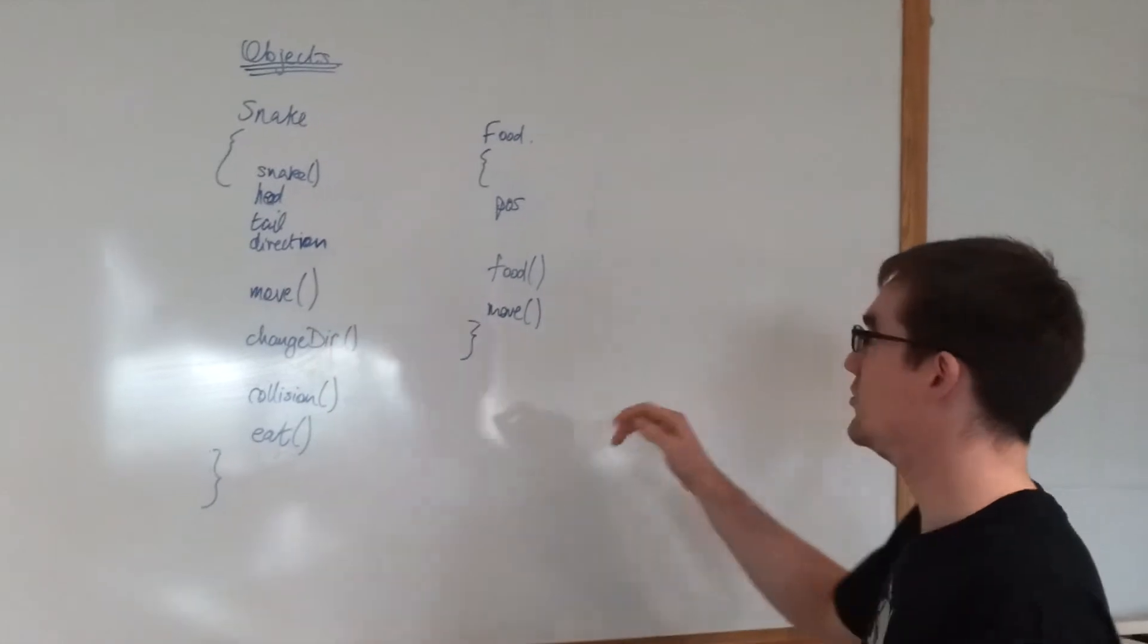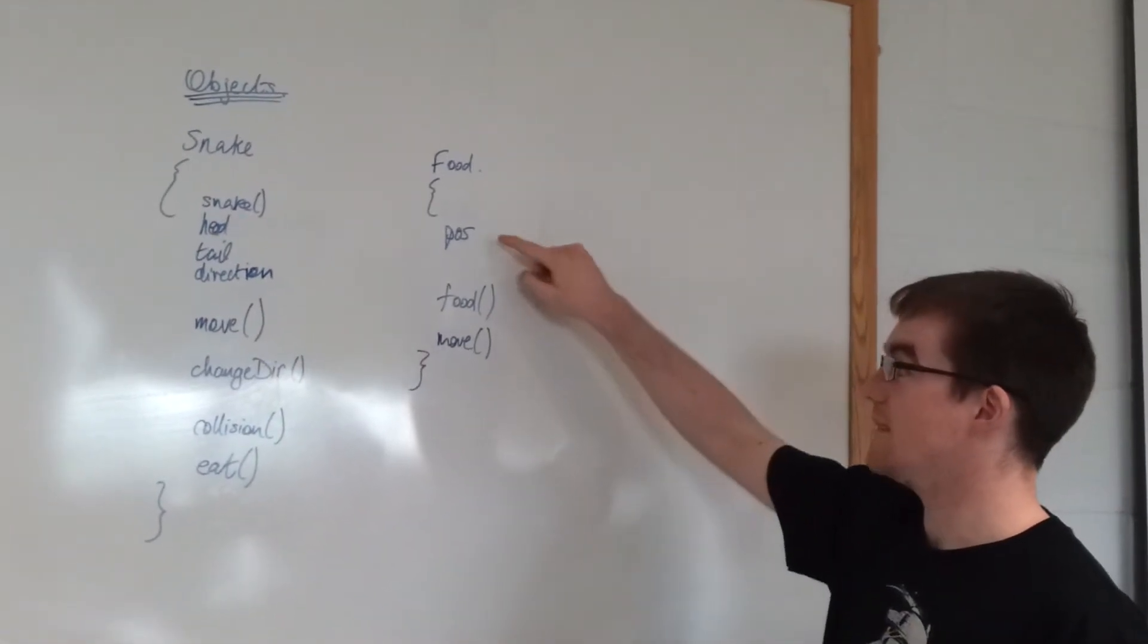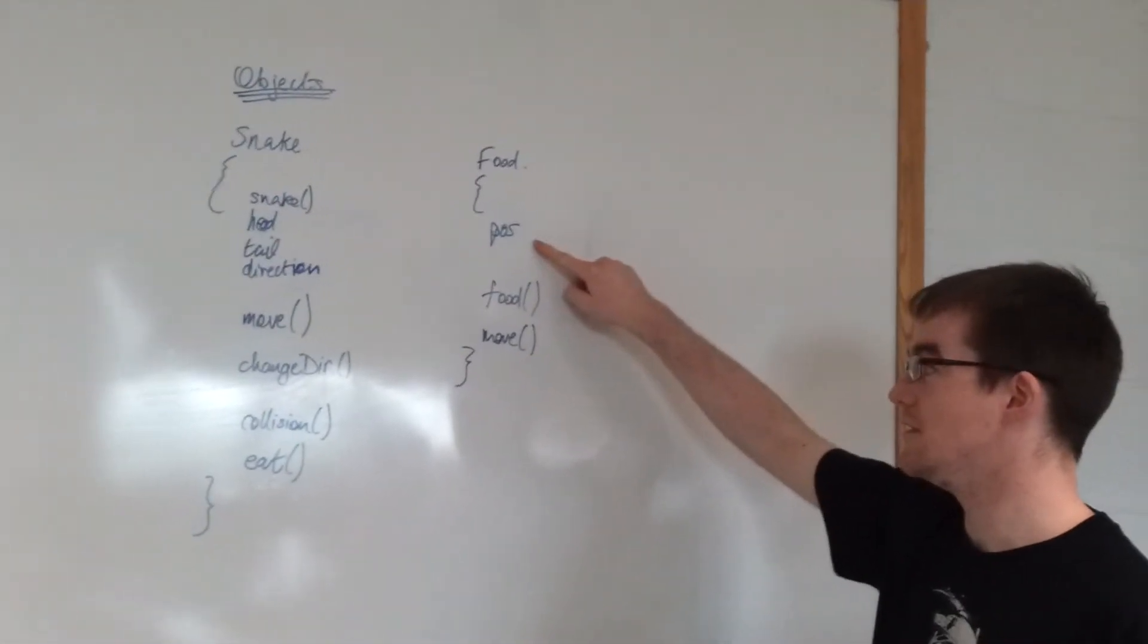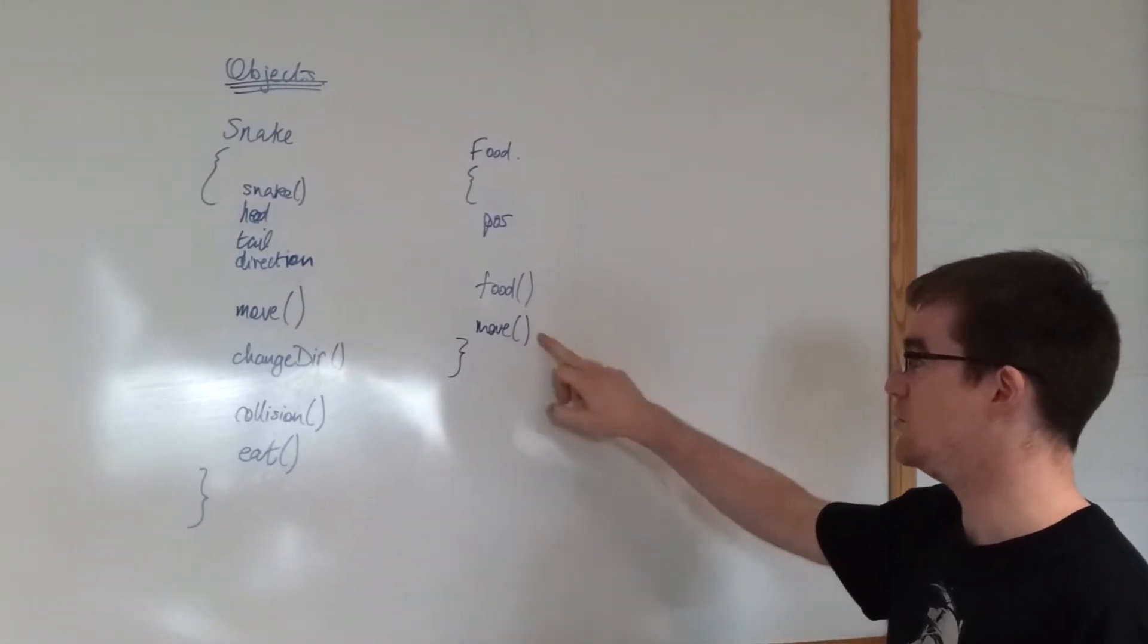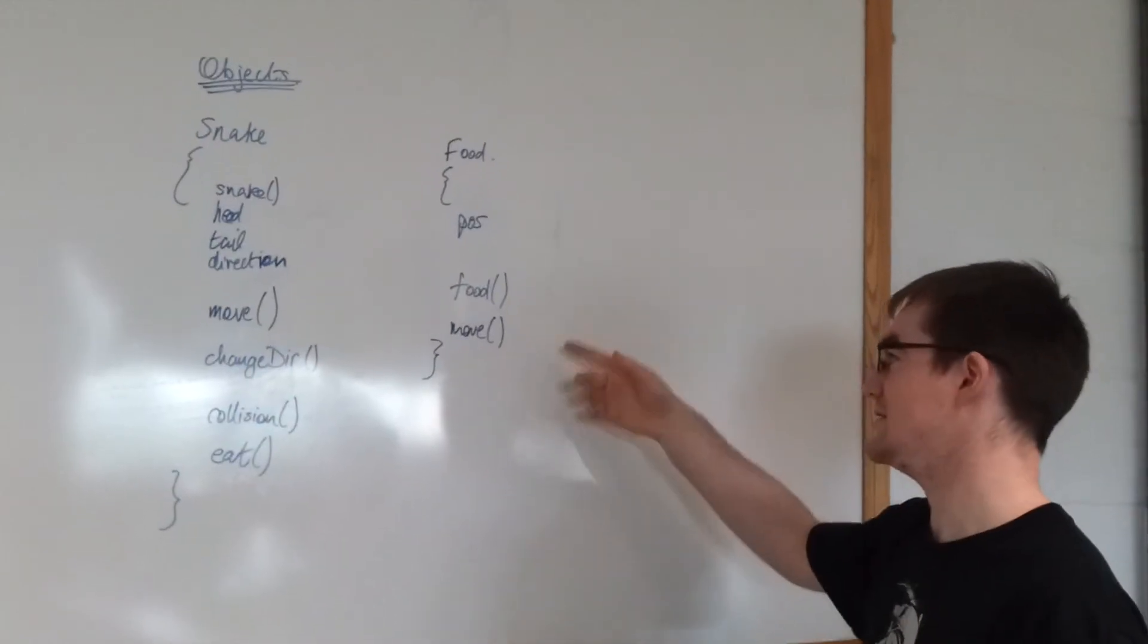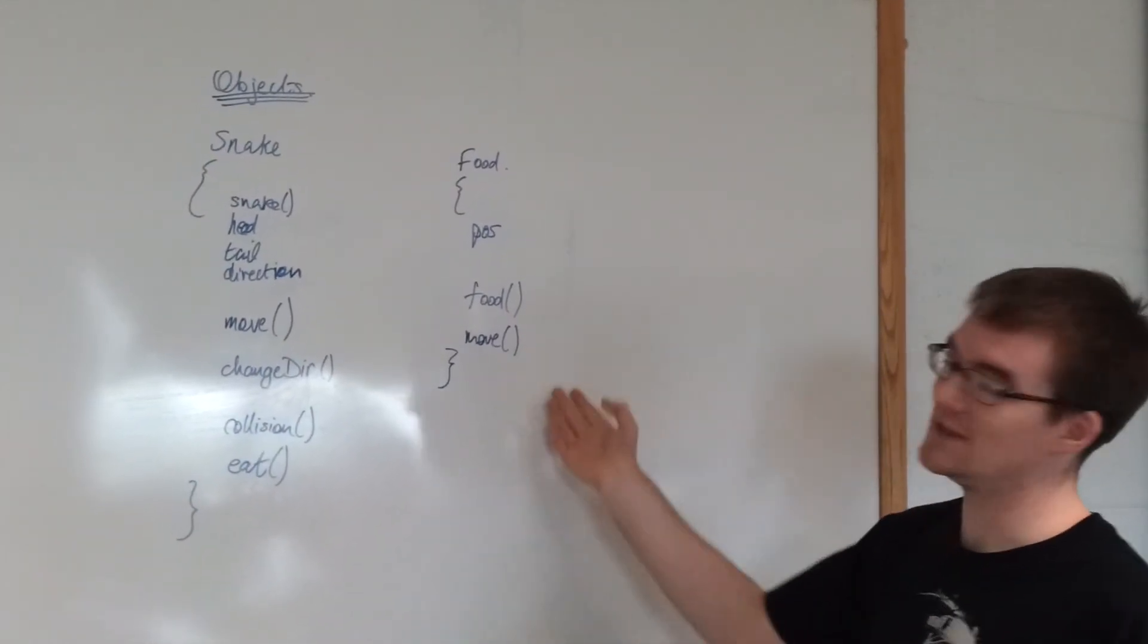That's pretty much it. And then, with the food object, we need its position, we need a constructor so that we can generate it in a random position on the grid, and we need a move. So that when one piece of food is eaten, we'll just call the move function and it'll move somewhere else.